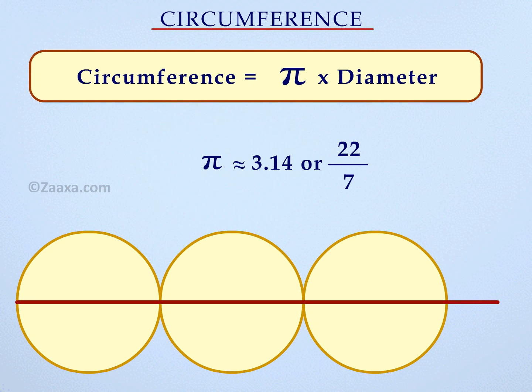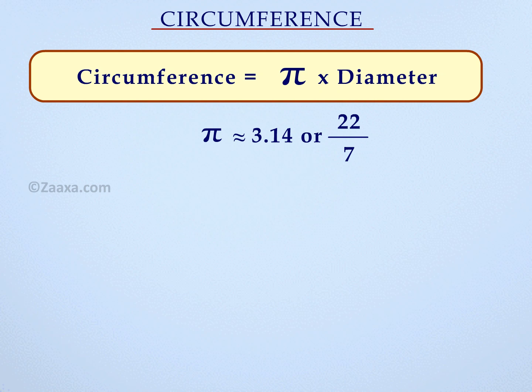So, if we know the diameter of a circle, we can easily find the circumference of that circle by multiplying it by 3.14 or 22 over 7. So remember, the formula to find the circumference of a circle is pi times diameter.